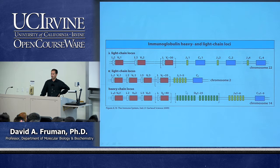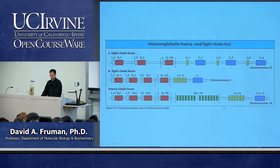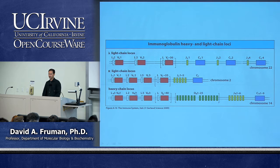In the final exon for the variable domain, you get a V segment joined next to a J segment, or for the heavy chain V, D, and J together. The nomenclature uses subscripts: a Greek lambda or kappa symbol or capital H for heavy chain. For example, the second V segment in the heavy chain locus would be called VH2, and the third V segment in the kappa chain locus would be Vκ3.